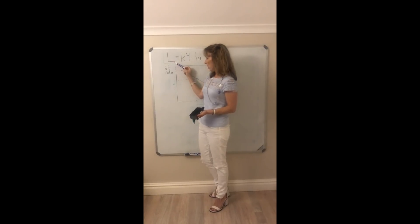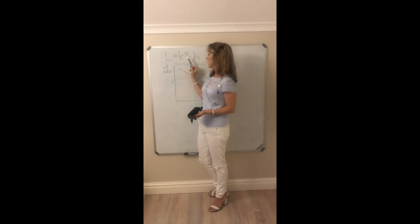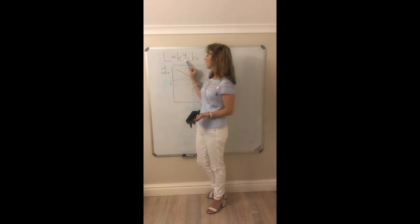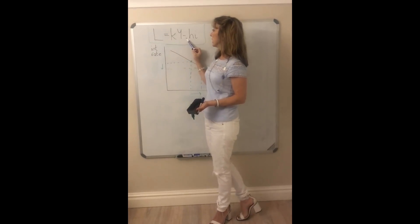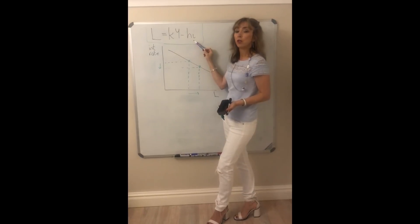We see that the demand for money or liquidity is positively related, we don't put the positive sign in, but it's positively related to income and it's negatively related to the interest rates.